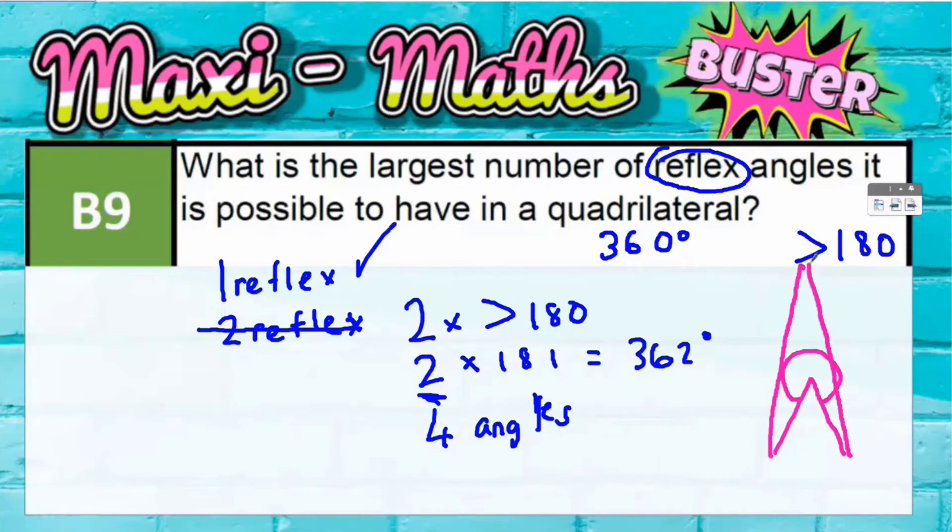So you could join up there like that and then join the other one up here as well, almost like an arrowhead. You've got a reflex angle here which is clearly bigger than 180, and then the other three angles would have to be acute. So you can have one reflex and three acute angles.